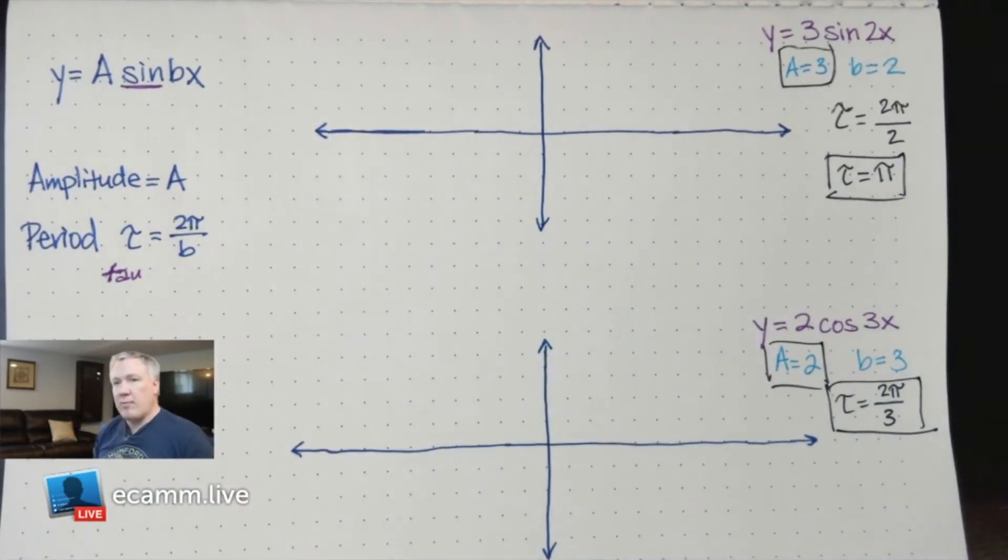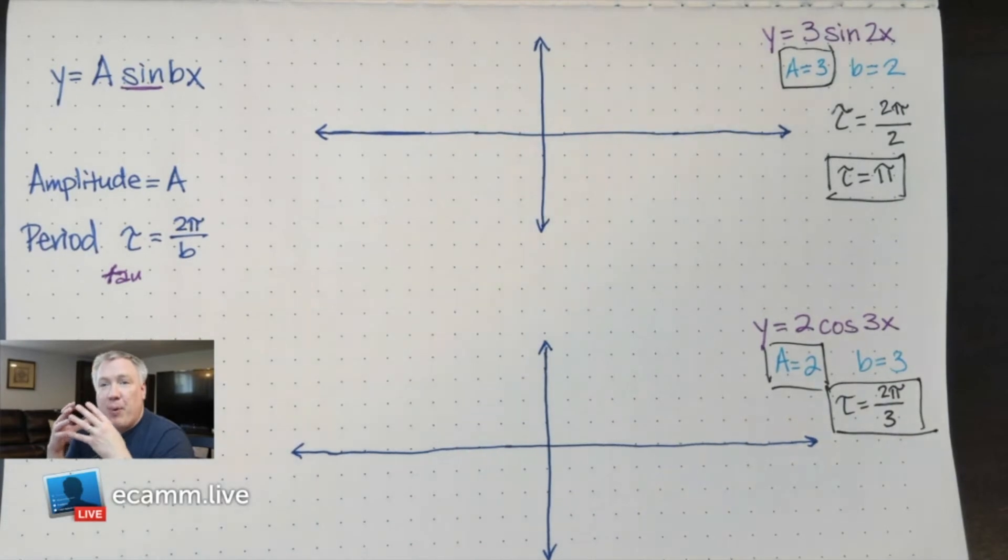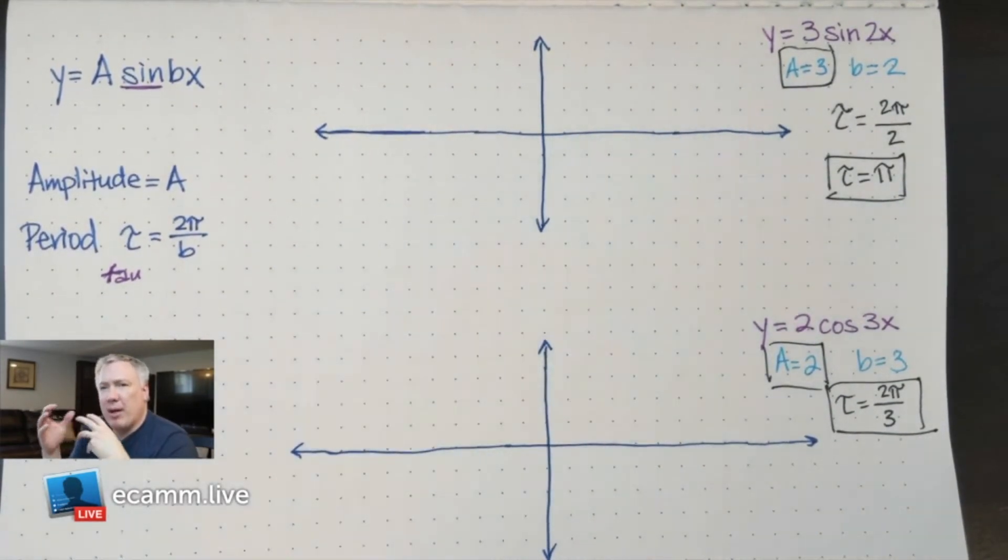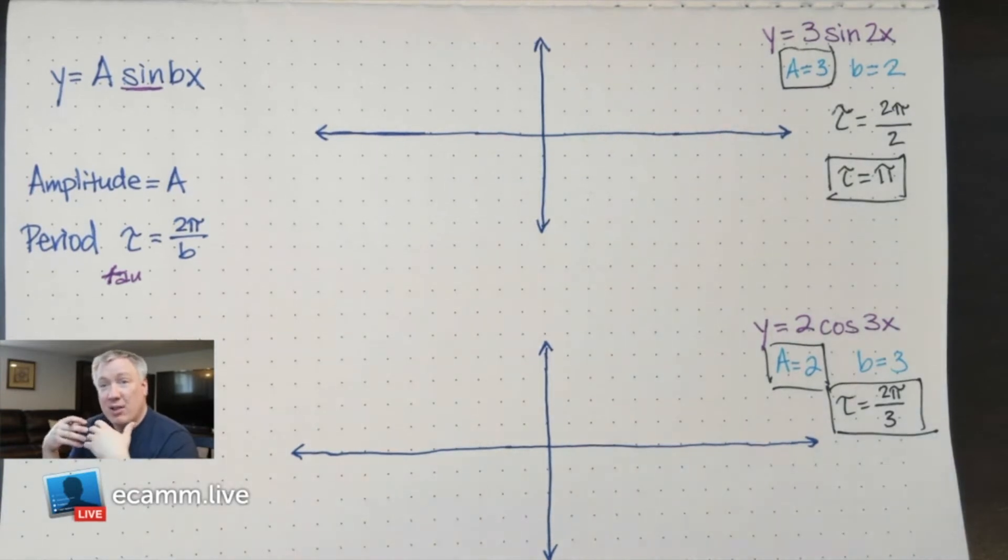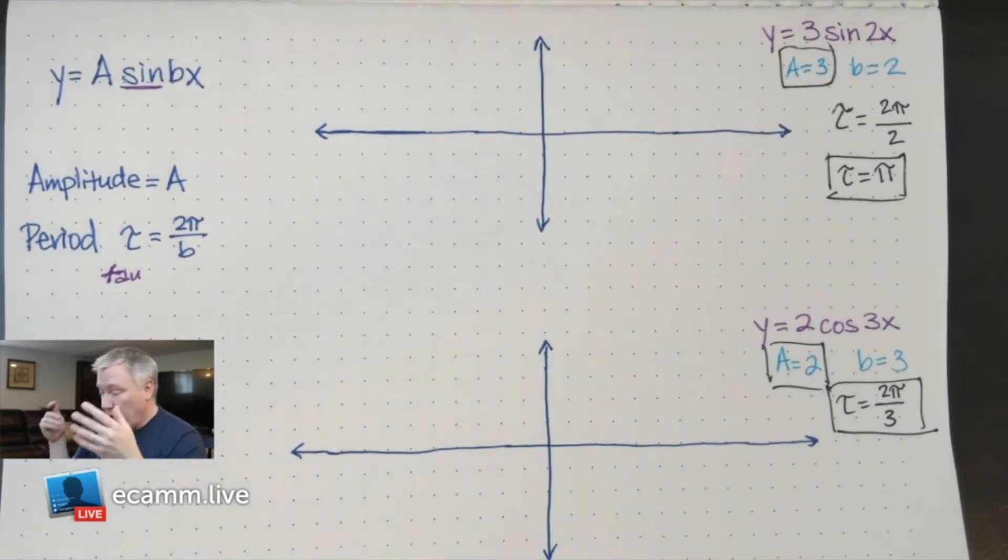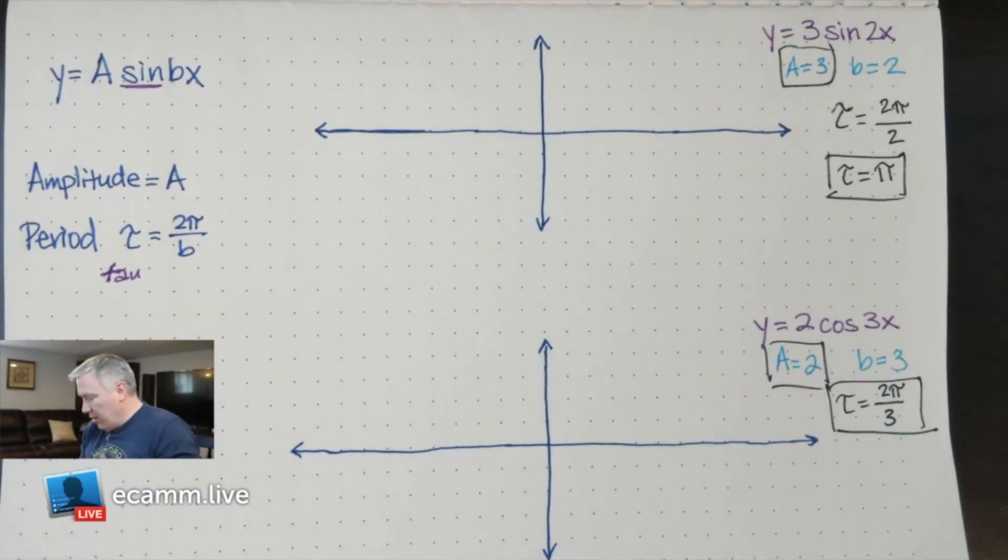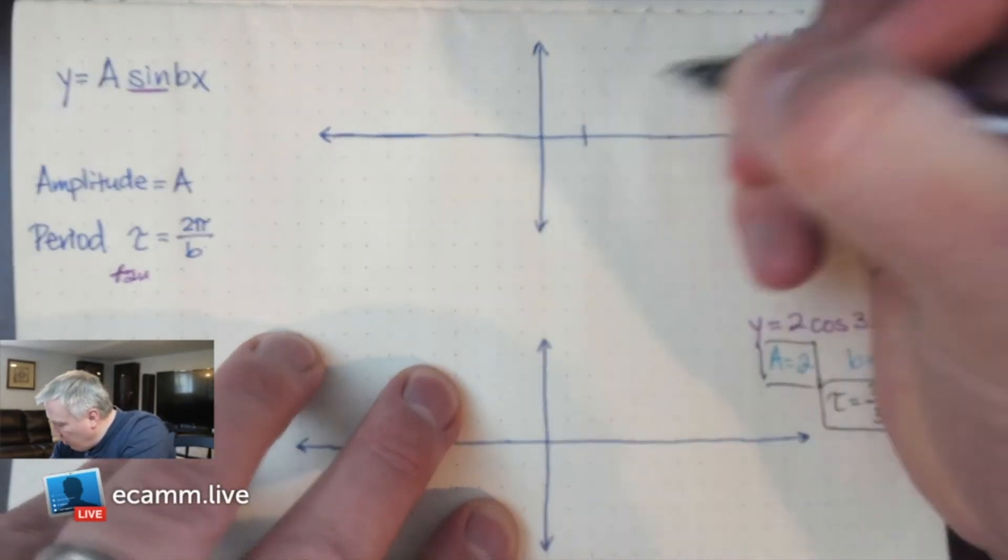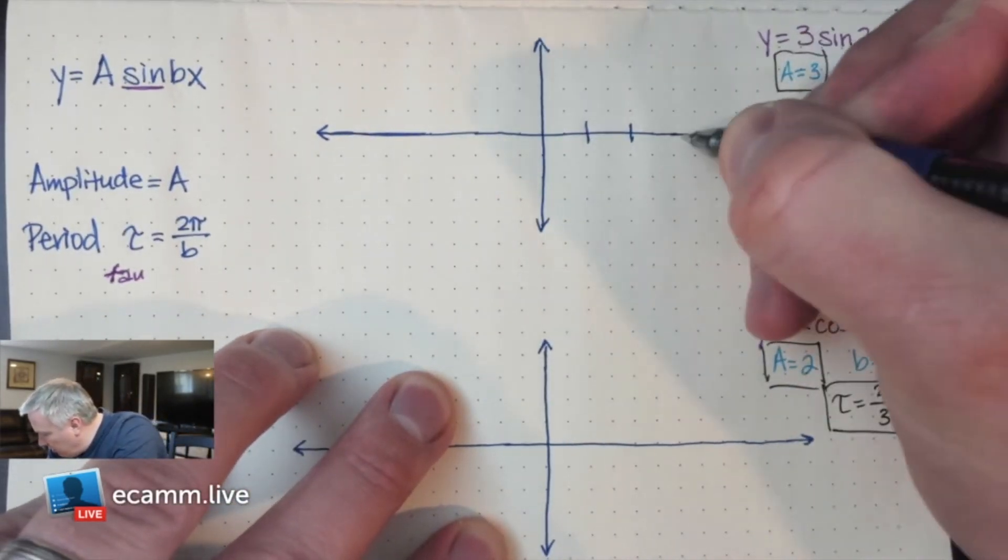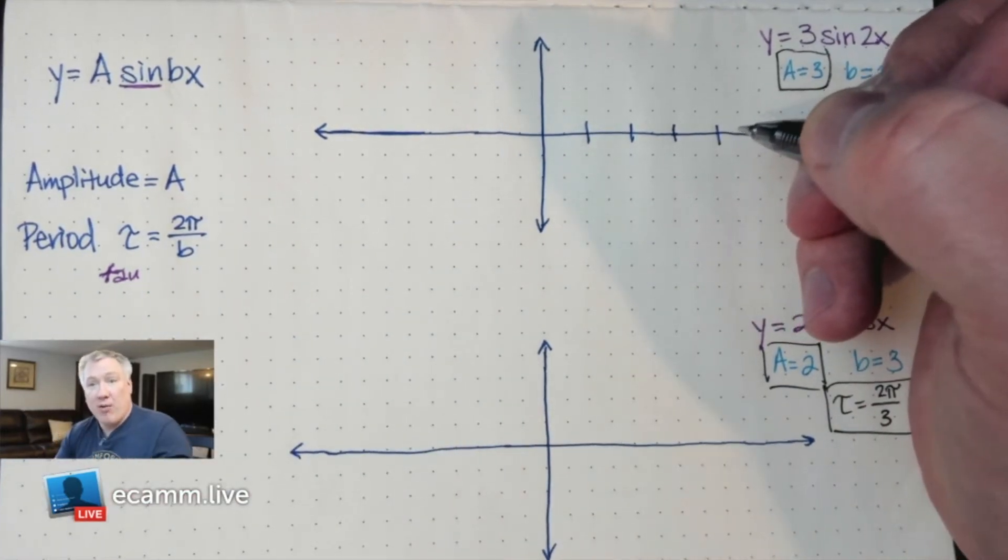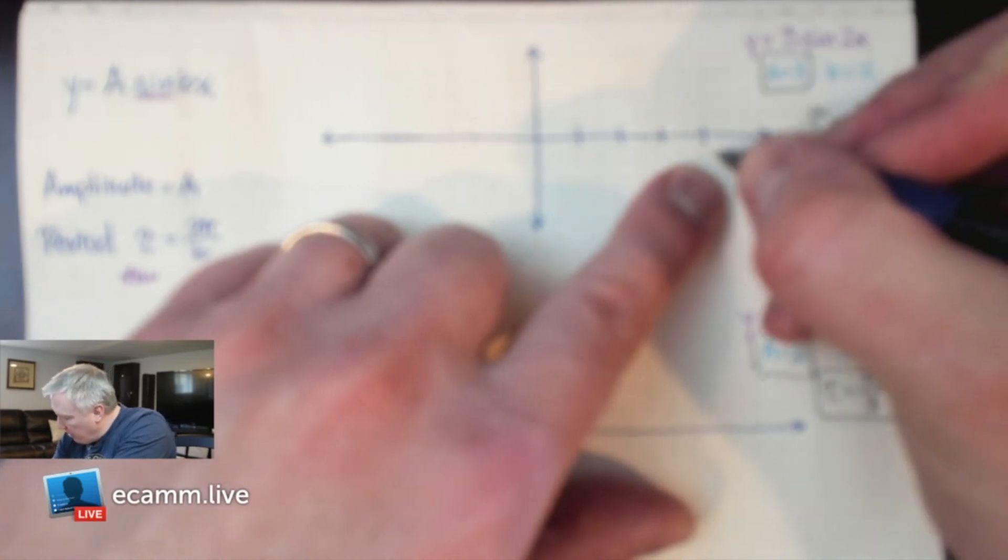The best way to graph these accurately, clearly, and be able to identify the different features is to use those two things, amplitude and period, to create a scale that makes it easy to draw. I'll show you how this works. I'm going to count out 1, 2, 3, 4 tick marks, and on that fourth tick mark, I'm going to write my period. So my period here is π.